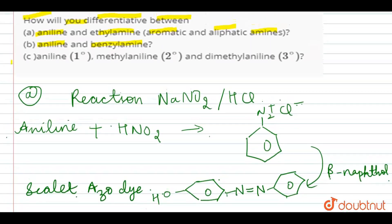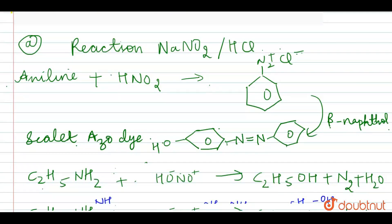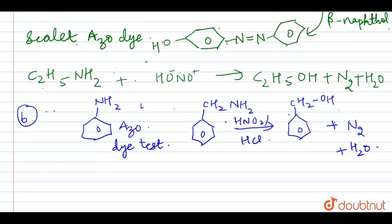Now, if we move to our third part, we have to differentiate between aniline first degree, methylaniline second degree, and dimethylaniline third degree. This aniline will again give azo dye test.